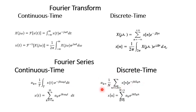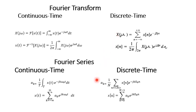For the discrete time periodic signal, the first two are the analysis equations which convert the time domain signal into the frequency domain signal. Similarly, we have the analysis equation for the aperiodic signal — one for the continuous time case and one for the discrete time case. Fourier transform is used for the aperiodic signal, whereas Fourier series is used for the periodic signals.